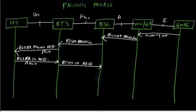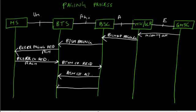The BSC sends back a channel activation message to activate the radio channel, then sends a BTSM immediate assignment command to the BTS to assign the standalone dedicated channel.